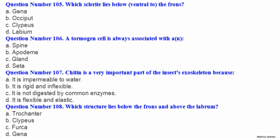Question number 105. Which sclerite lies below, ventral to, the frons? A gena, B occiput, C clypeus, D labium. Question number 106. A tormogen cell is always associated with: A spine, B apodeme, C gland, D seta.